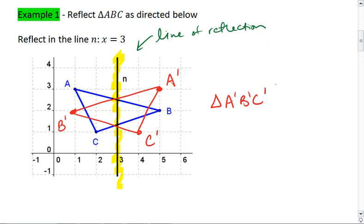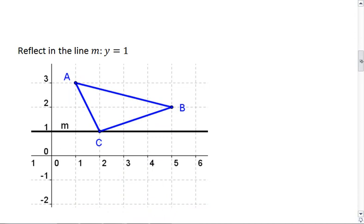Triangle A prime, B prime, C prime is the image of triangle ABC.